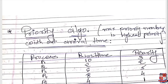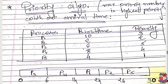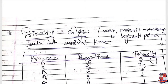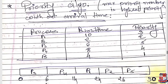Let us start with the priority algorithm without arrival time. Without arrival time means each and every process has an arrival time value equal to zero. For both max priority and min priority, the concept is: if the question states that the max priority number equals highest priority, it means we use the max priority algorithm; and if min priority number equals highest priority, we use the min priority algorithm.